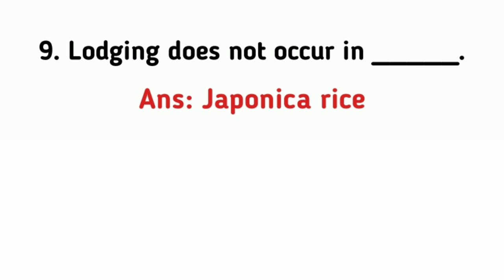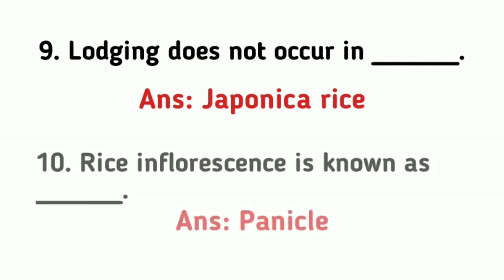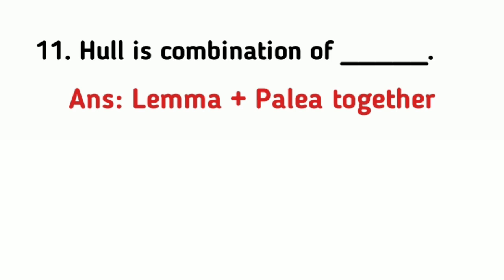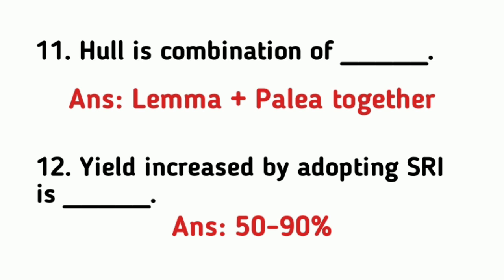Lodging does not occur in Japonica rice. Rice inflorescence is also known as panicle. Hull is the combination of lemma and palea. Yield increased by adopting the SRI method is 50 to 90 percent.